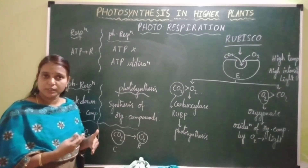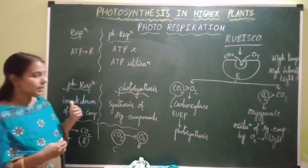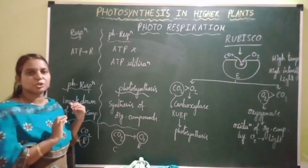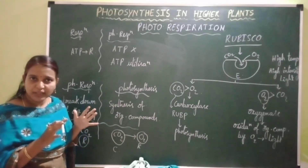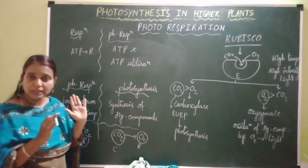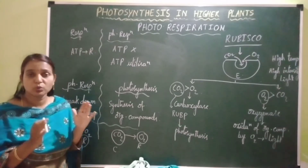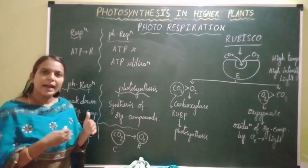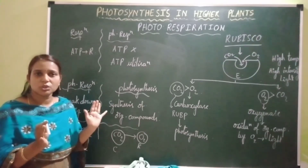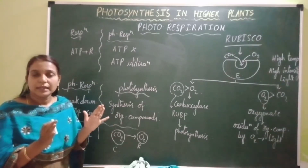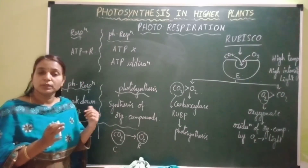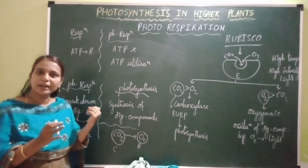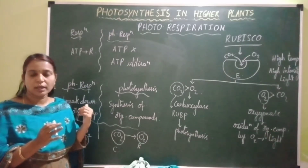Through photorespiration, there is no synthesis of energy — instead there is consumption of energy. There is no synthesis of organic compounds; instead there is utilization of energy in the form of ATP and breakdown of organic compounds.